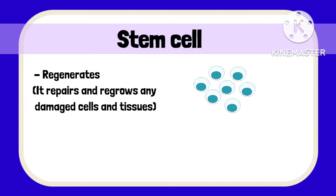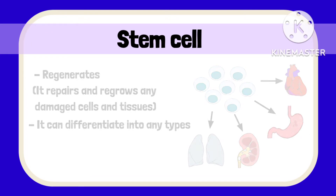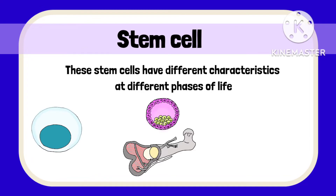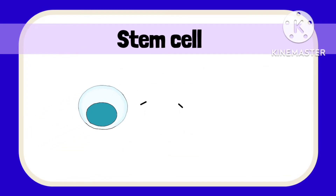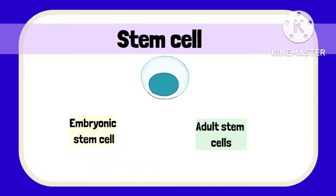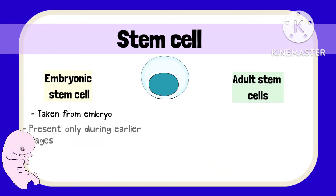Stem cells can differentiate into any type of cell or tissue. Stem cells have different characteristics at different phases of life, so they are divided into two main types with further subgroups: embryonic stem cells and adult stem cells. As the name suggests, embryonic stem cells are taken from an embryo and are present during the earliest stages of development only.